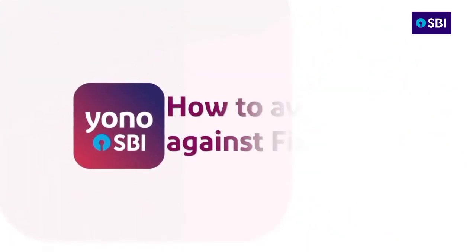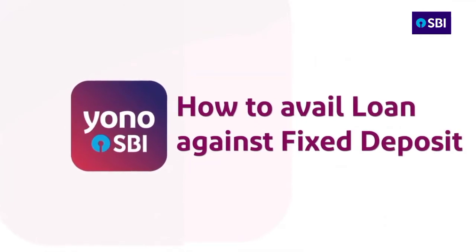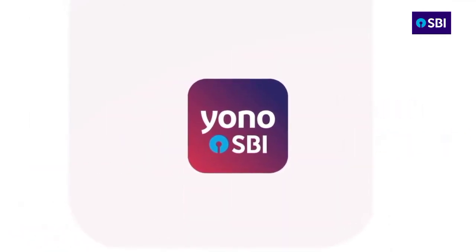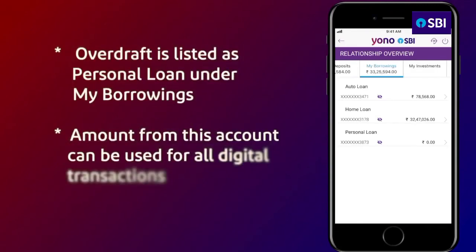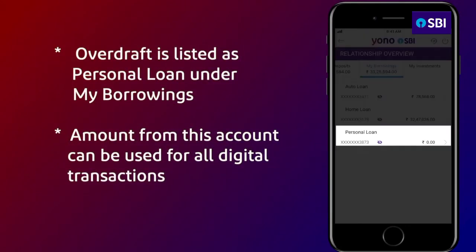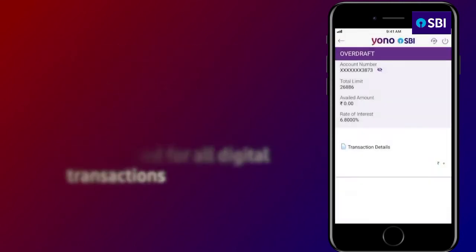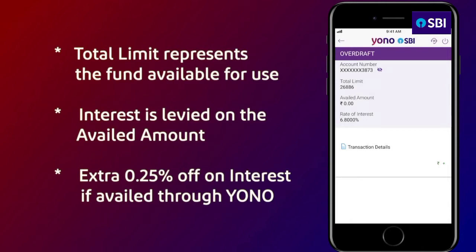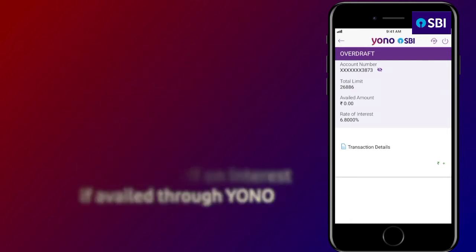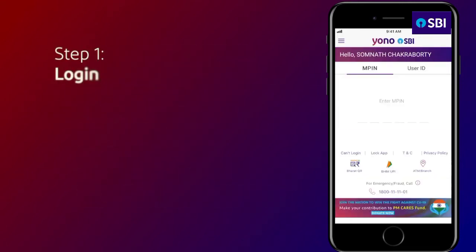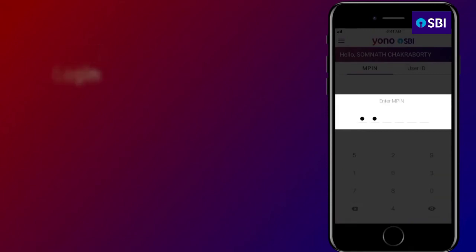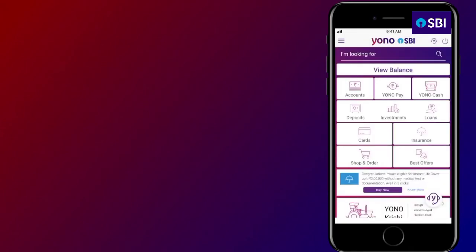This video will show how you can avail an overdraft against your fixed deposit through UNO. This overdraft is essentially a loan against your FD — it keeps your FD intact while giving you additional funds to meet your needs at very attractive interest rates. In addition, you get a discount of 0.25% on the overdraft interest rate when you avail it on UNO.